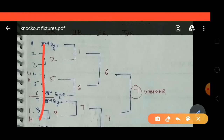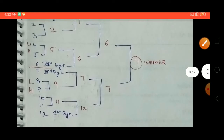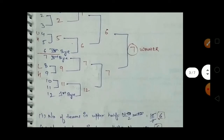For 12 teams, first you have to write all the 12 teams in serial order like 1, 2, 3, 4, 5, 6 up to 12. Then after writing all the teams in serial order from 1st to 12th, the first thing is to divide the fixture into upper half and lower half.